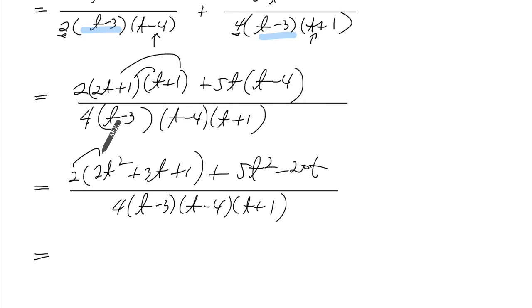So this becomes 4. So 4 plus 5 is 9t squared, 6 minus 20 minus 14, minus 14t, and a plus 2.